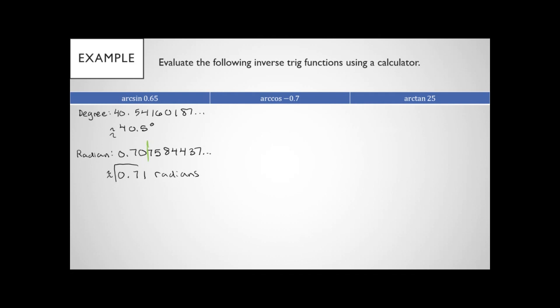In general, we want to give answers in radians unless it's a real-world problem. If possible, convert to a fraction of pi, but for non-special angles we just leave it as a decimal. There's no easy way to do that conversion by hand, so we won't worry about it.